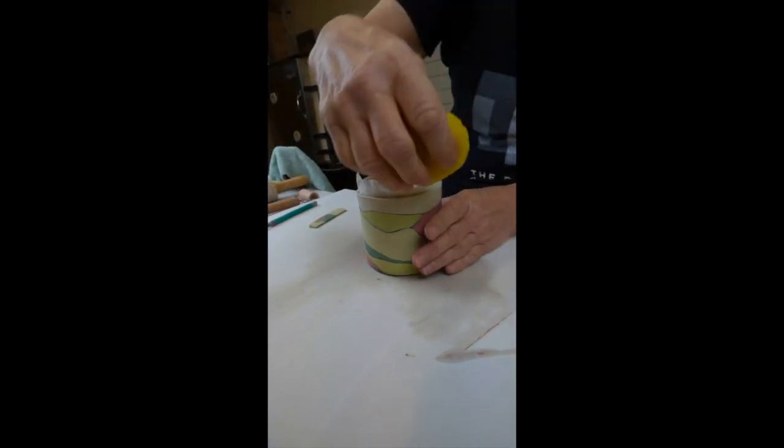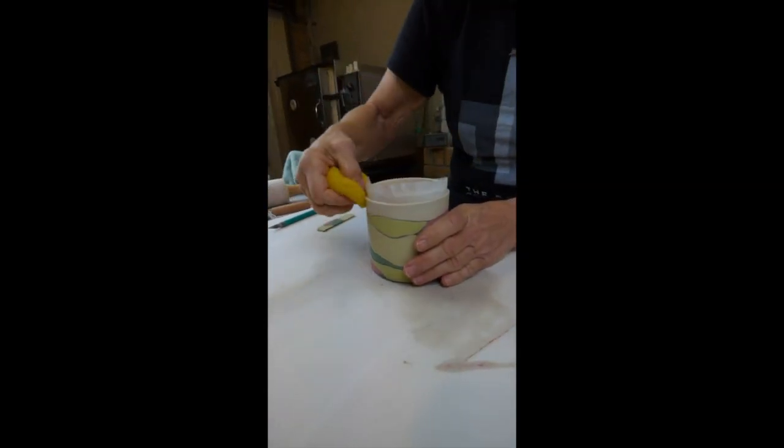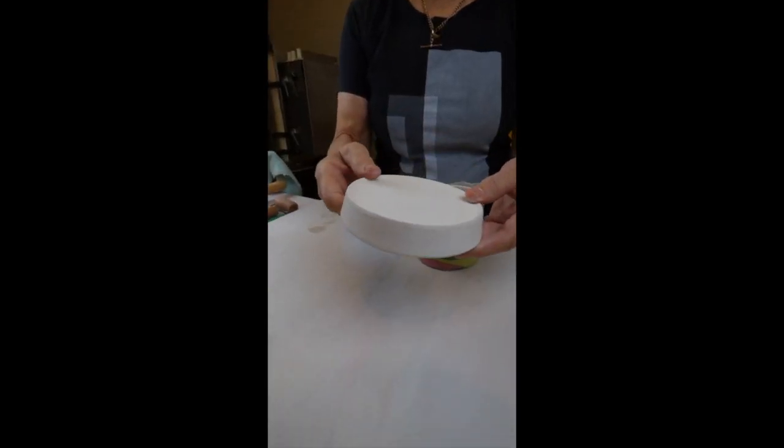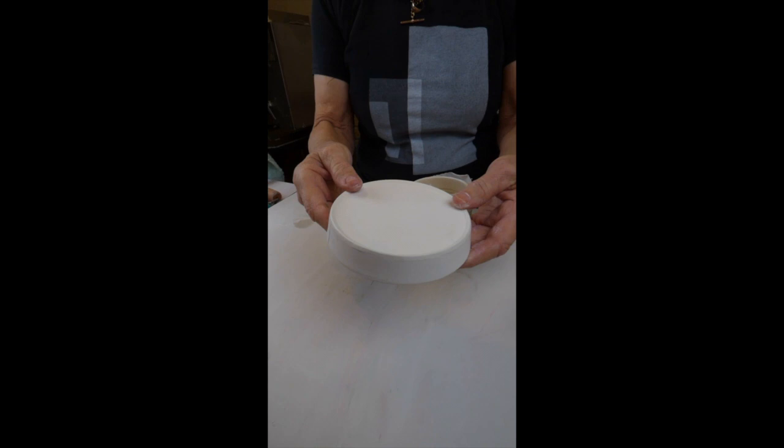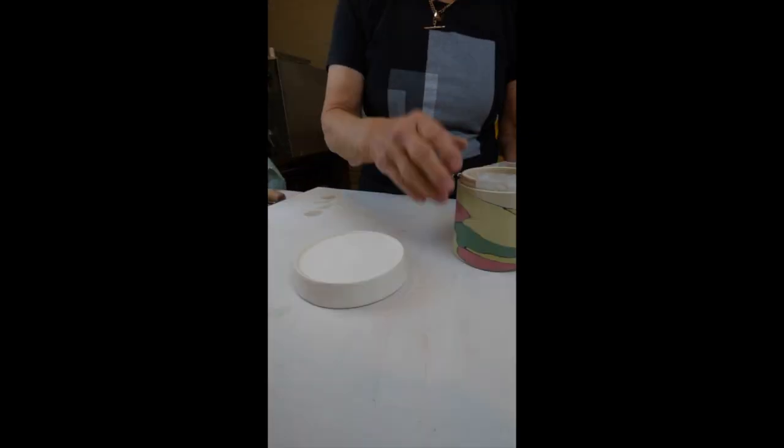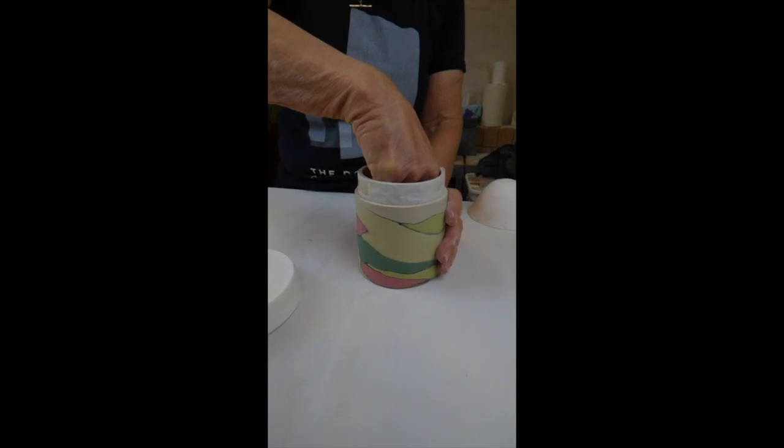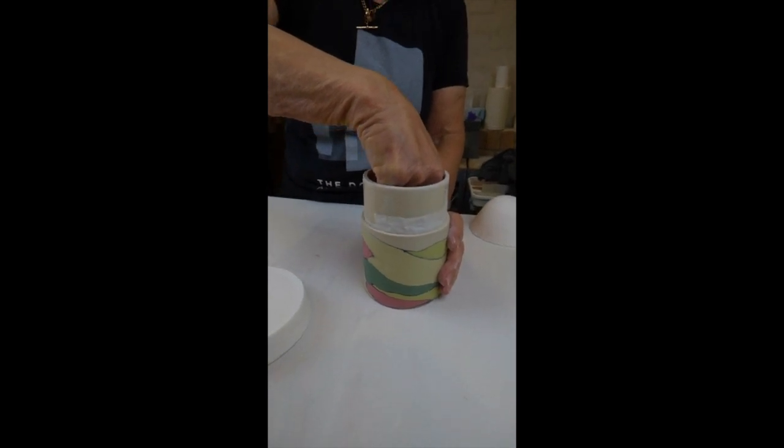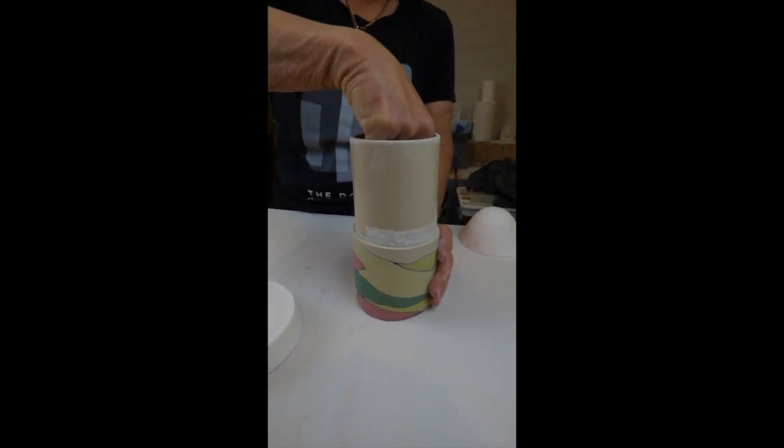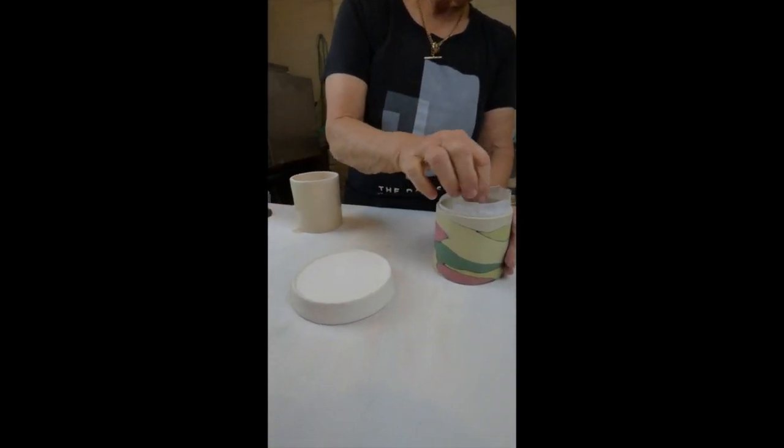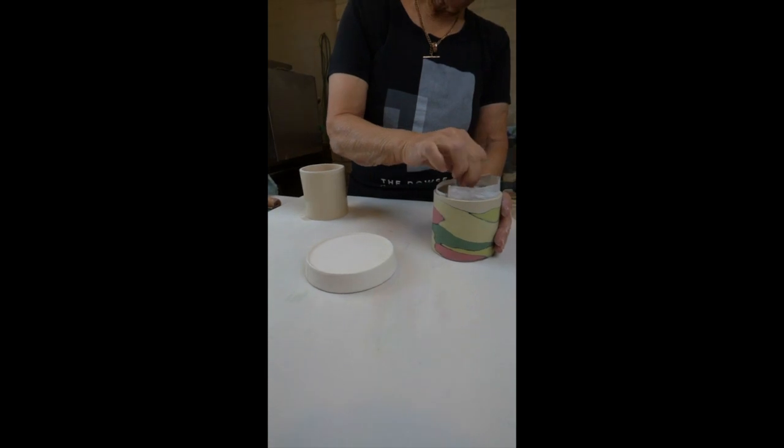This is a plaster mold that I've made specifically for making the bases of the cups. What I do is I take the former out of the cup. See how it slides out because it's protected by that layer of baking paper. We lift the baking paper out.